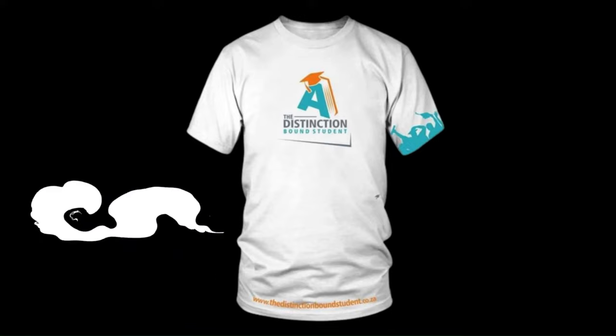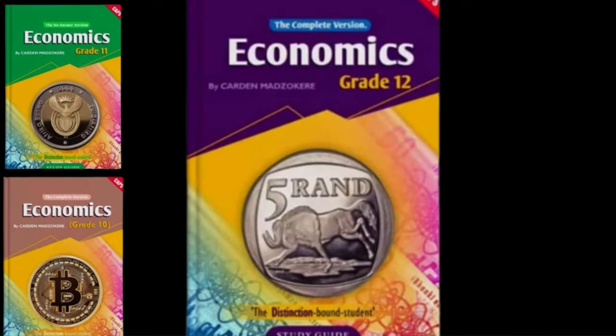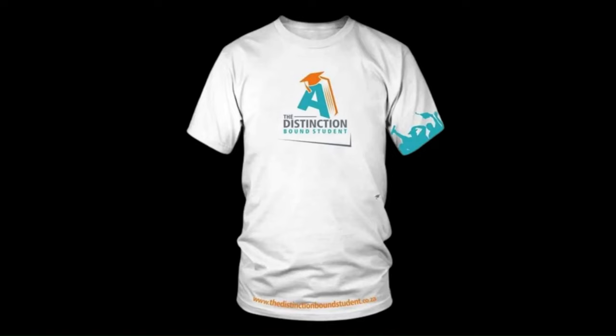We are also giving away the distinction bound student t-shirts to people who buy more than 10 books. At the moment we have the following textbooks: Economics grade 10, 11, and 12 plus Business Studies grades 11 and 12. We are looking forward to adding more books to our catalog. Remember our books come in two versions - complete and no answers versions. Complete versions have answers and no answers versions do not. Thank you so much for your support. See you in the next video. God bless.